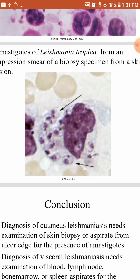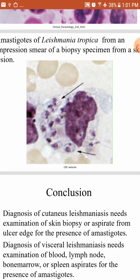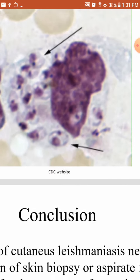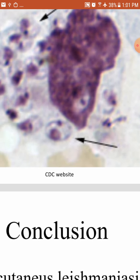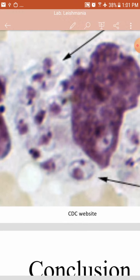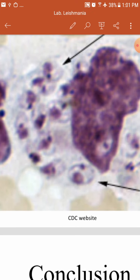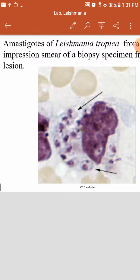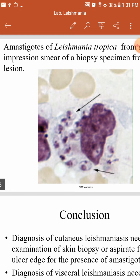This is a macrophage — you can see its boundaries and its large nucleus. The macrophage is filled with amastigotes. The amastigote is oval in shape, contains a large nucleus on the periphery, and contains the kinetoplast. The amastigote will replicate inside the macrophage, then the macrophage will burst, releasing amastigotes outside to infect another macrophage.